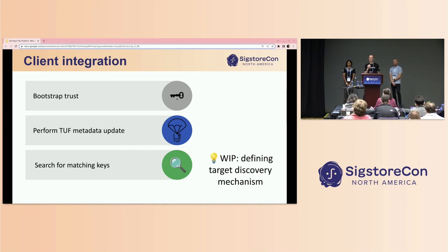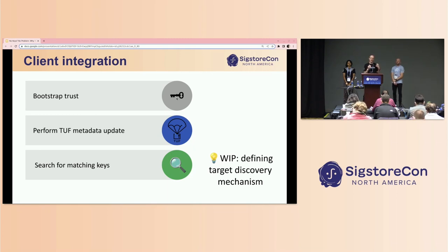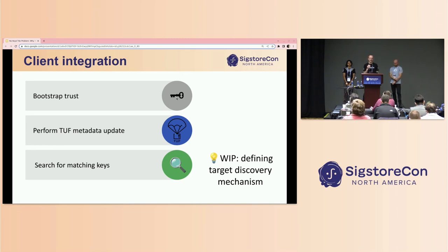Concretely, this comes down to three things clients need to implement: they need to bundle a copy of the trusted root metadata, they need to perform the steps of the TUF metadata update workflow, and they need to be able to search for matching keys. Right now that means looking at the retrieved JSON metadata and doing a pattern match on the names of the target key files. We're currently working to define a more robust target discovery mechanism so that each client doesn't have to manually inspect the metadata — we want to define more of an API contract for this kind of work.